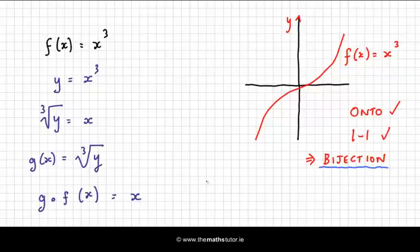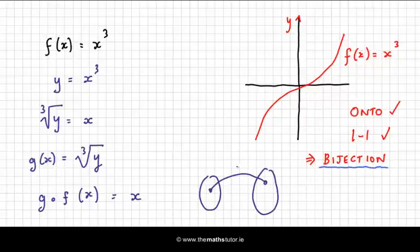So you have f maps from one point to the next, like so, and then g maps back again to the original point.